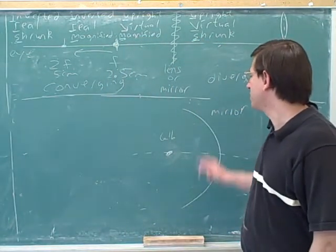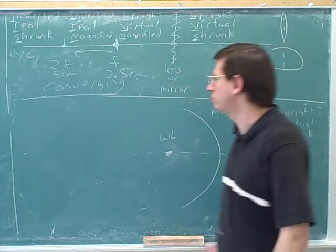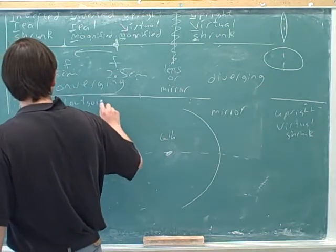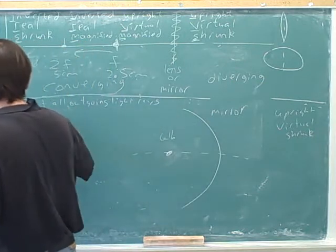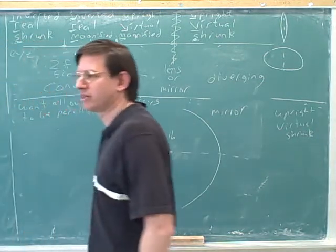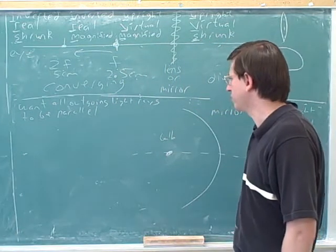Now, let's say we want the mirror to produce all parallel outgoing light rays. We want all the outgoing light rays to be parallel. Where should we put the bulb?